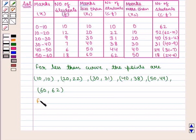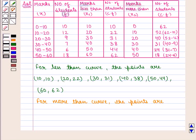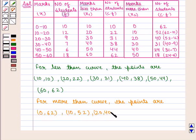Therefore, for the more than curve the points are: (0, 62), (10, 52), (20, 40), (30, 31), (40, 24), and (50, 18).